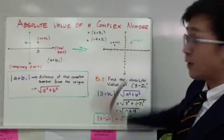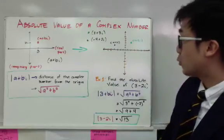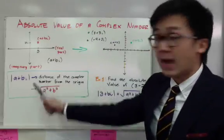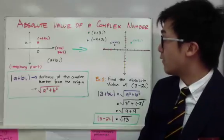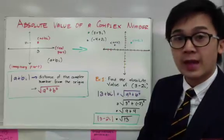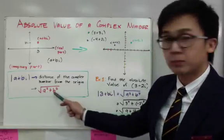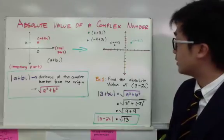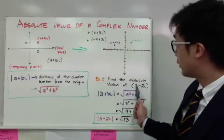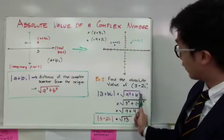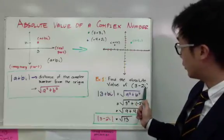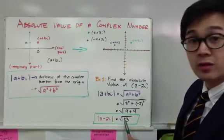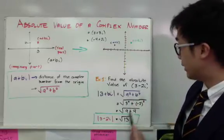Now that you understand how the graph of a complex number is plotted against the x-y plane, we're going to find the absolute value of a complex number. The absolute value is basically the distance of the complex number from the point of origin, and the formula is square root of a squared plus b squared. For example, for 3 minus 2i, a is 3 and b is negative 2, so you have square root of 3 squared plus negative 2 squared, which gives you square root of 9 plus 4, equal to square root of 13.